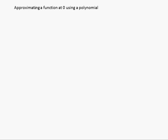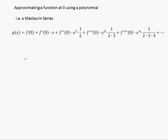Basically, if we want to approximate a function around x equals zero by using a polynomial, that's what the Maclaurin series is all about. The Maclaurin series is writing a polynomial that approximates another function, f of x.